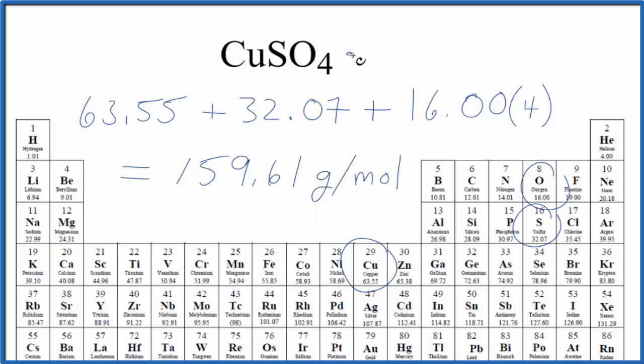Often, we'll see CuSO4 with 5H2O. This is the hydrated form. We call this copper-sulfate pentahydrate, and we'd add five water molecules to our molar mass.